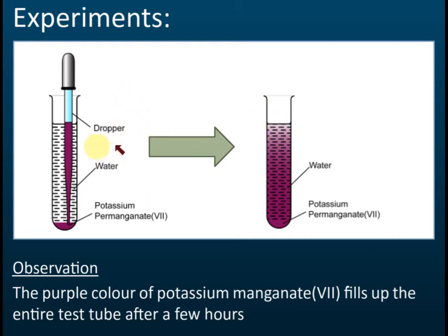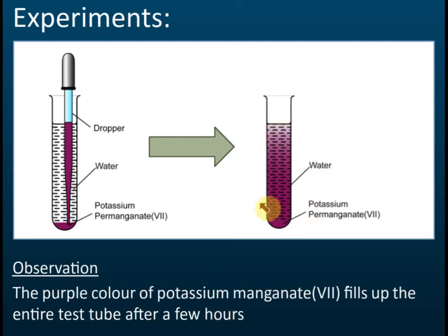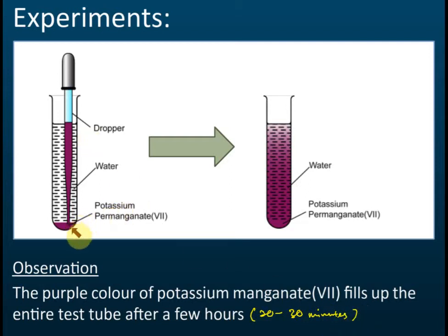These are diffusions in liquids. We use potassium permanganate — the color is purple — and we use droppers to drop the potassium permanganate into the water. After a few hours, or actually just 20 to 30 minutes, you can already see the results.